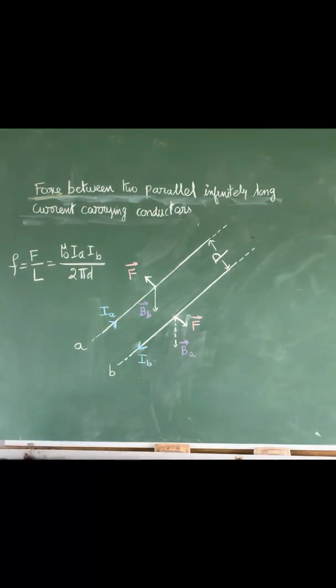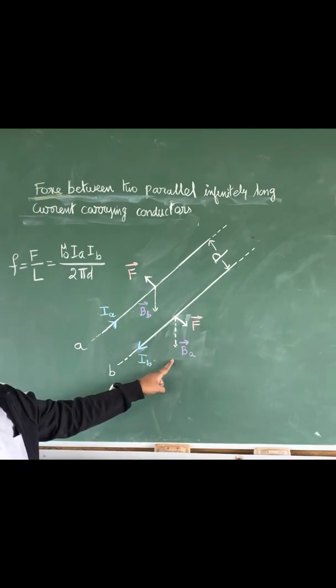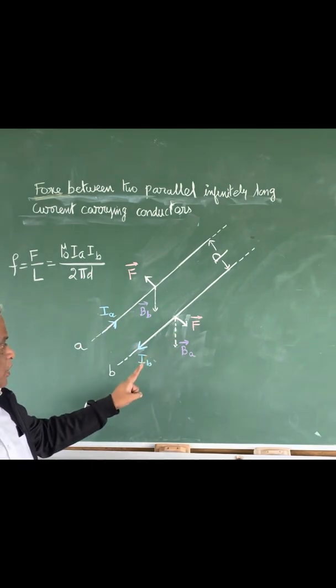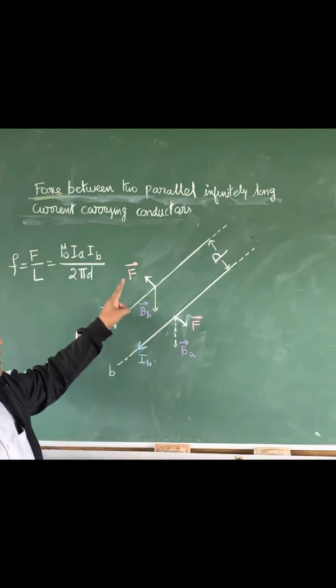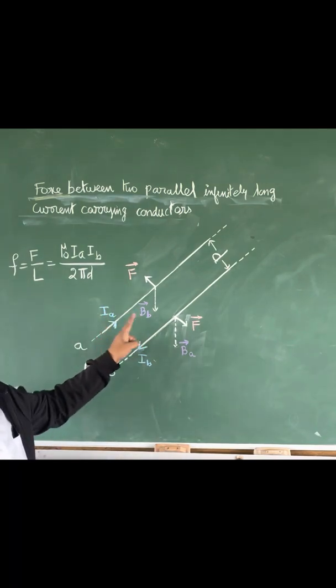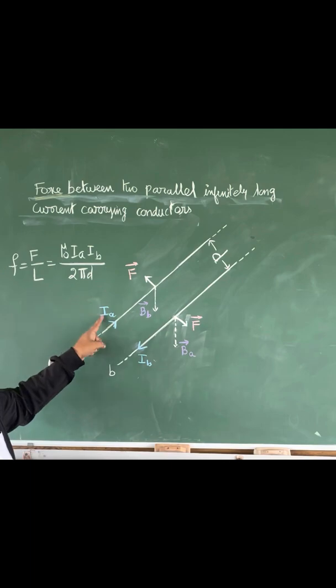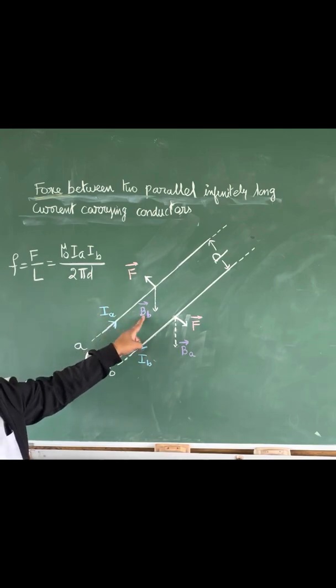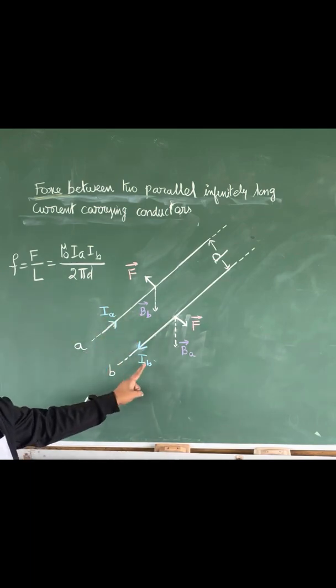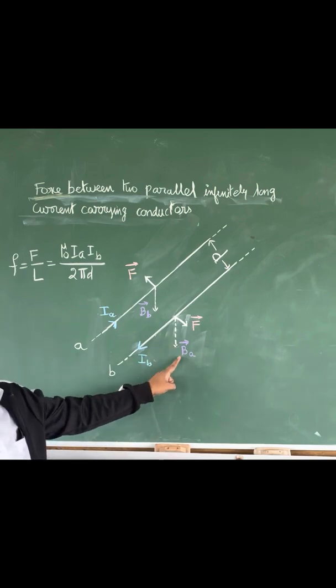Now the magnetic field produced by conductor A is external to B and the magnetic field produced by B is external to A. So conductor A is in the external field of B and conductor B is in the external field of A.